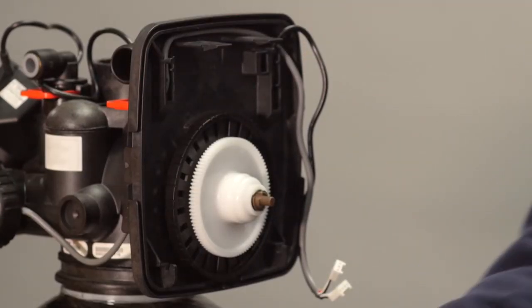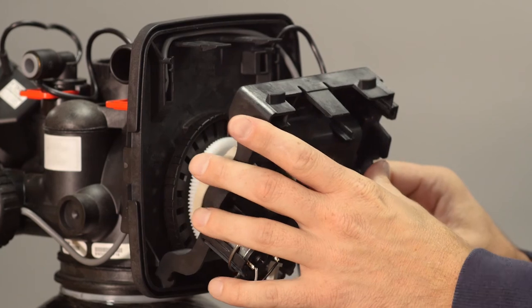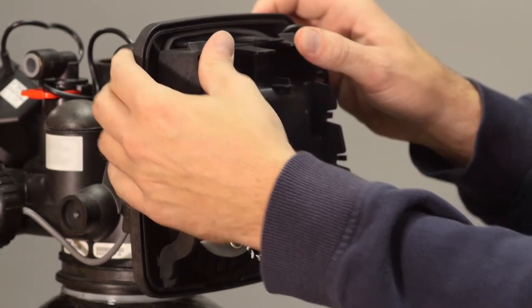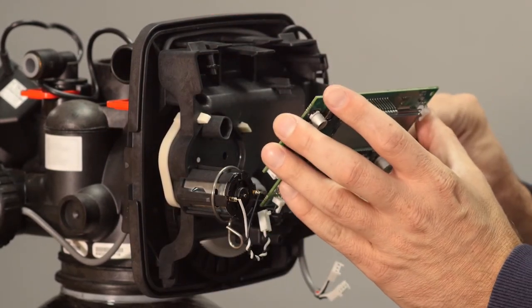Set the drive bracket onto the two bottom hooks and tilt into place. Make sure both upper locking tabs snap into place.